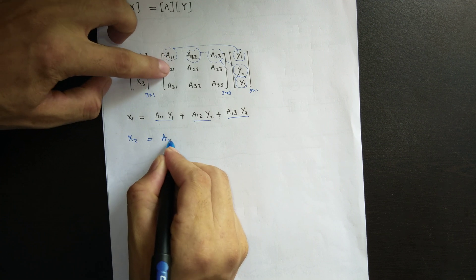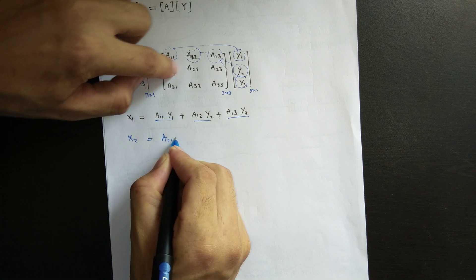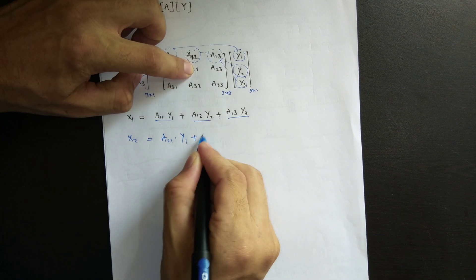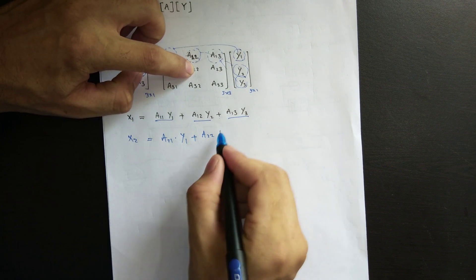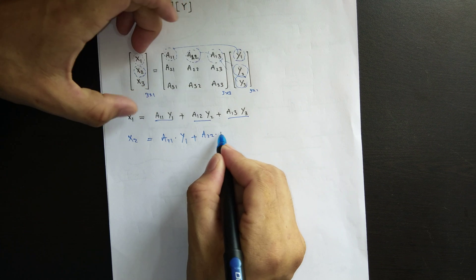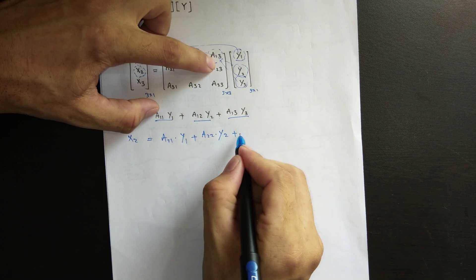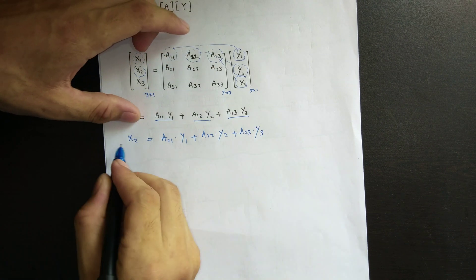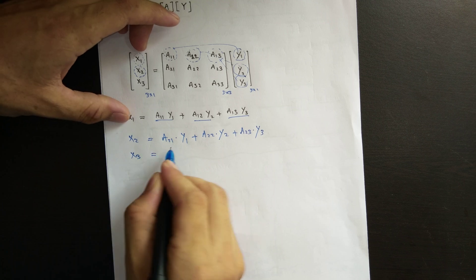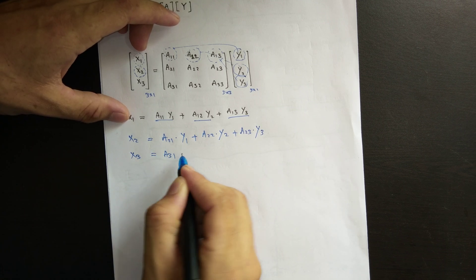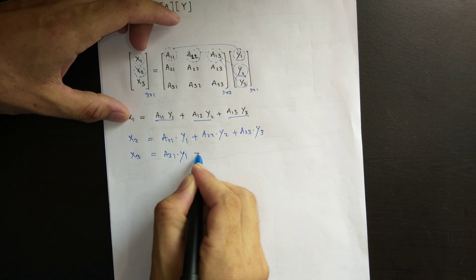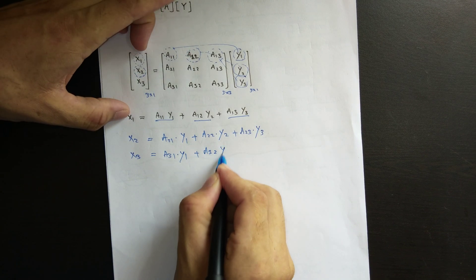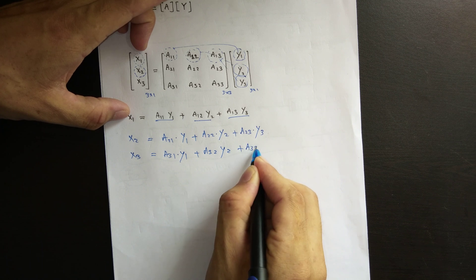X2 comes as A21 multiplied by Y1, plus A22 multiplied by Y2, plus A23 multiplied by Y3. X3 is equal to A31 multiplied by Y1, plus A32 times Y2, plus A33 times Y3.